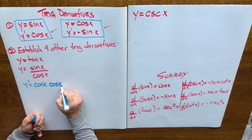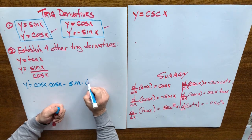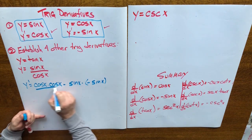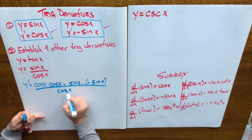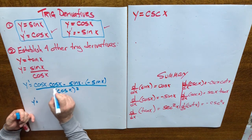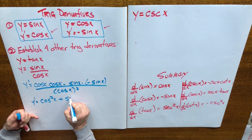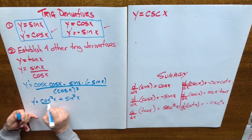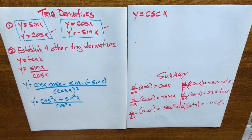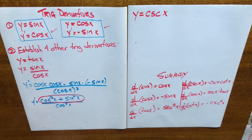minus the numerator sine x times the derivative of the denominator, all over the denominator squared. Simplifying: cos x times cos x gives cos squared x, minus sine x times negative sine x gives plus sine squared x, all over cosine squared x. Well, cosine squared x plus sine squared x is one of the famous Pythagorean identities, and it's equal to 1.